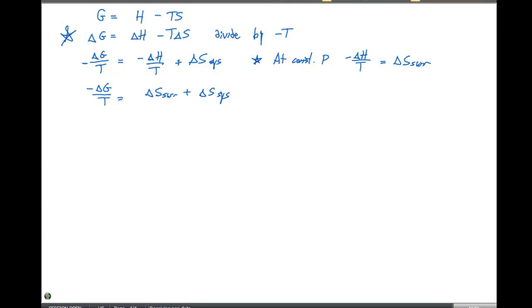Remember that we define the delta S of the universe to be the delta S of the surrounding plus the delta S of the system. So we can say, by manipulating these around, that our delta G is gonna equal the delta S of the universe times minus T.